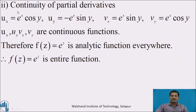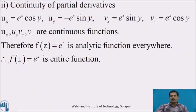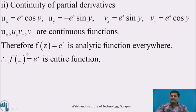Now consider the second condition: continuity of the four partial derivatives. Exponential, cosine, and sine are continuous functions, and the product of continuous functions is again continuous. Therefore all four partial derivatives are products of continuous functions and are continuous everywhere. Both conditions of the sufficient condition are satisfied, so f(z) = e^z is analytic everywhere — that is, it is an entire function.